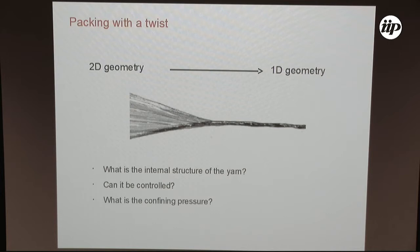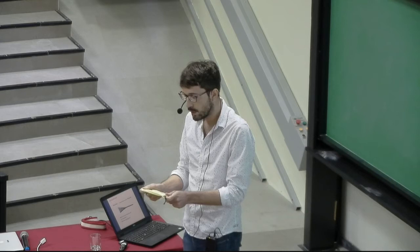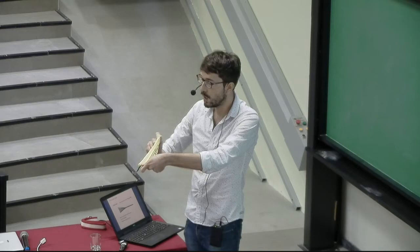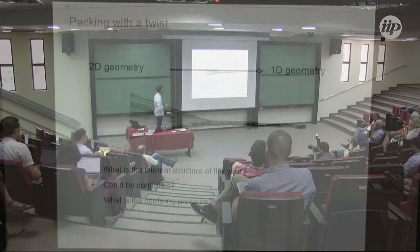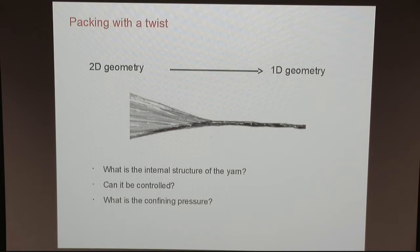It's a very simple experiment. You take a sheet, which is a 2D object with some elasticity, then you put some tension — it wrinkles already when you put tension. But I'm interested in what happens when you put some tension and give a twist. If you twist a lot, you can see that there is a packing of the cross section at a certain location. I really wanted to understand how you go from a 2D geometry, where you clamp the thin sheet, to a quasi-1D geometry of basically a yarn, as you go along the longitudinal axis.